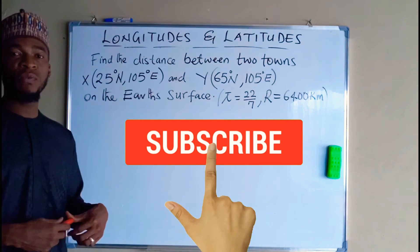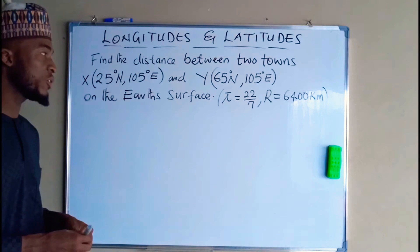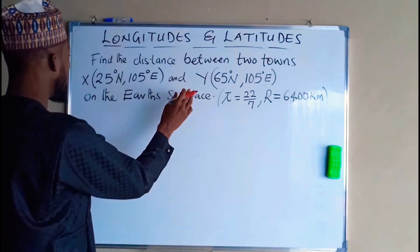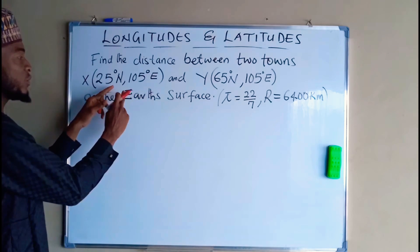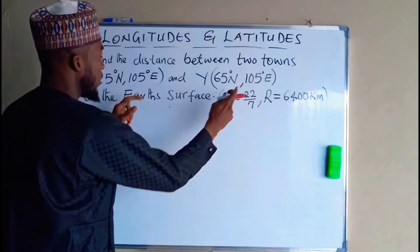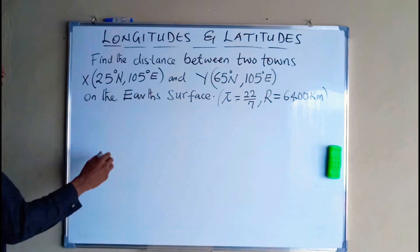Sometimes we may be asked to find the distance of two locations that are towards the same direction. Suppose we are asked to find the distance between these two towns. Both towns are towards another direction having the same longitude. So in this case, this is how you have to do it.